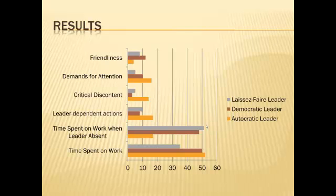What's really interesting is the time spent on work when the leader is absent. Here we see that the productivity of the autocratic leader group steeply declined, the democratic group remained about constant, and the laissez-faire group increased sharply. While you might get the most productivity from an autocratic leader while they're there, in their absence you can expect a steep decline — which calls to mind the old saying, when the cat is away, the mouse will play.